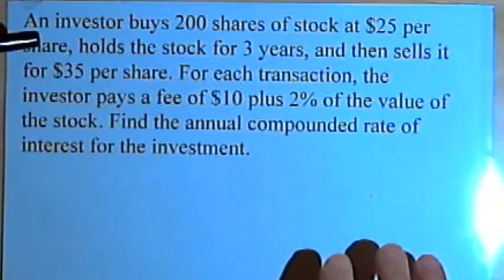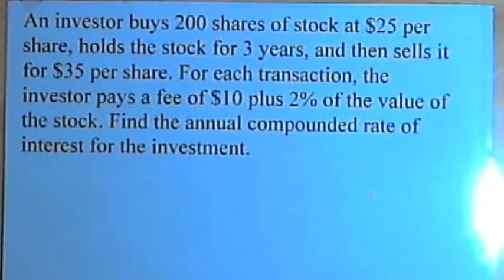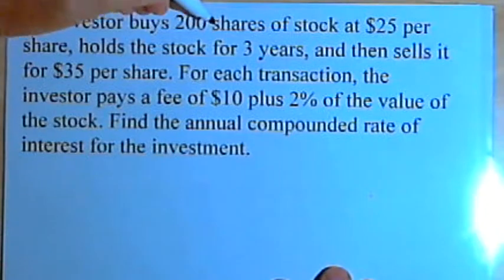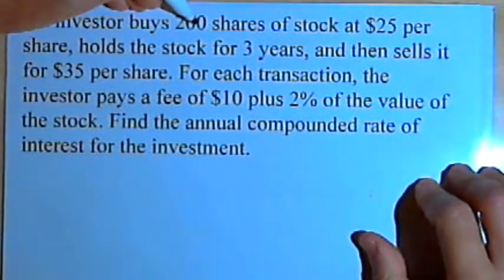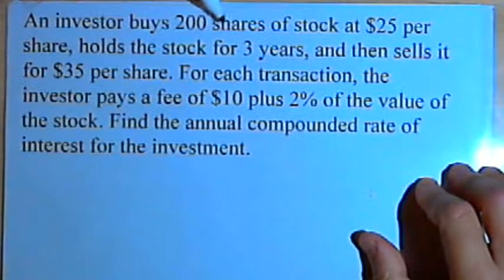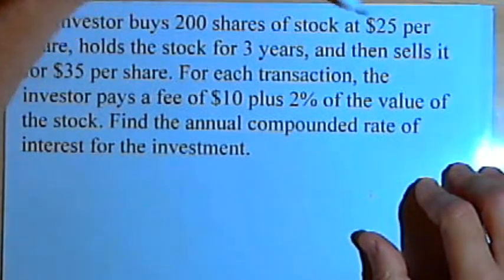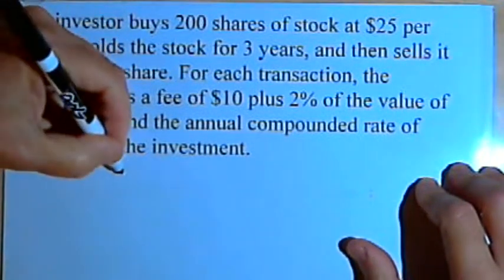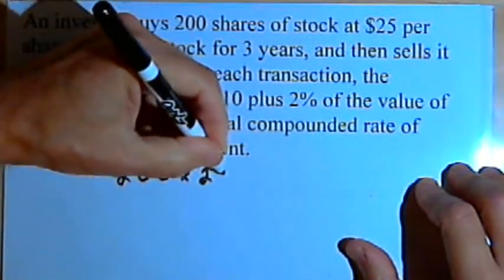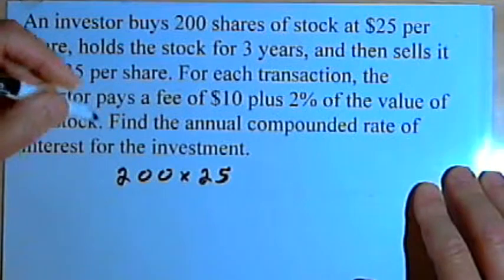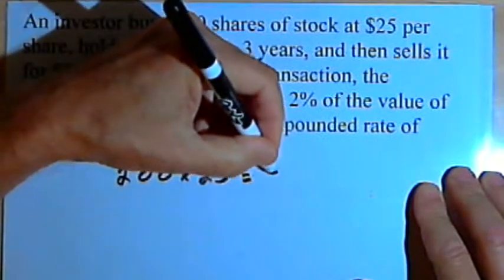Let's take this one step at a time. The investor buys 200 shares of stock at $25 per share. In other words, he bought 200 shares and pays $25 for each share. So he paid a total of 200 times $25, that's $5,000.